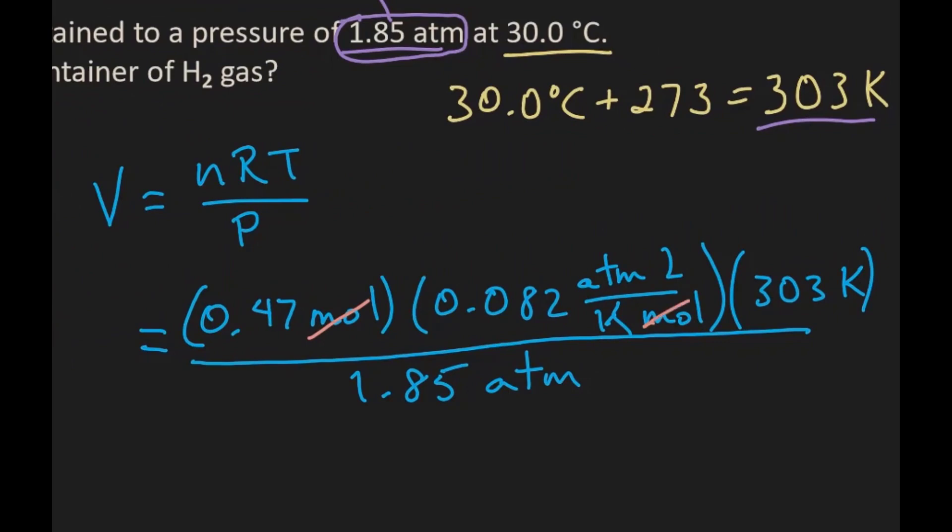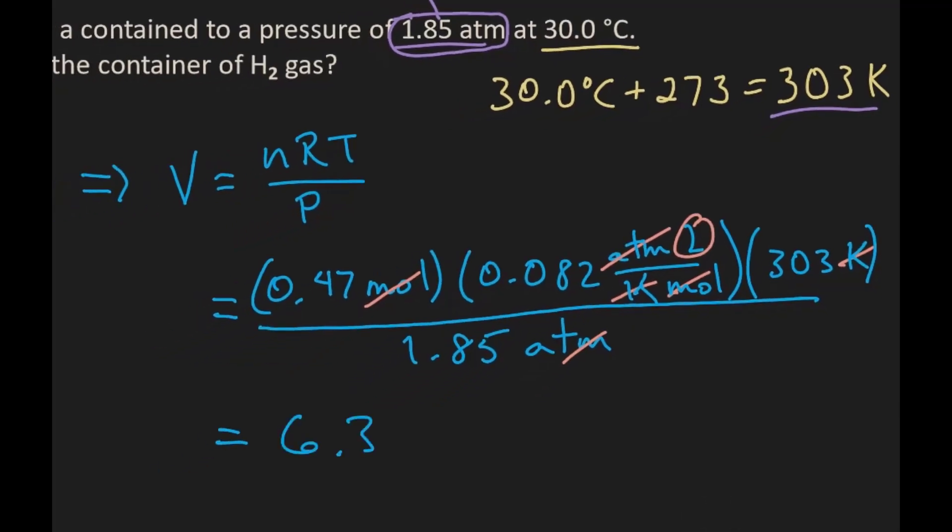Now moles cancel out top and bottom, atmospheres cancel out, Kelvin cancels out, and we are left with liters which is what we want for volume. So the answer is 6.3 liters of hydrogen gas.